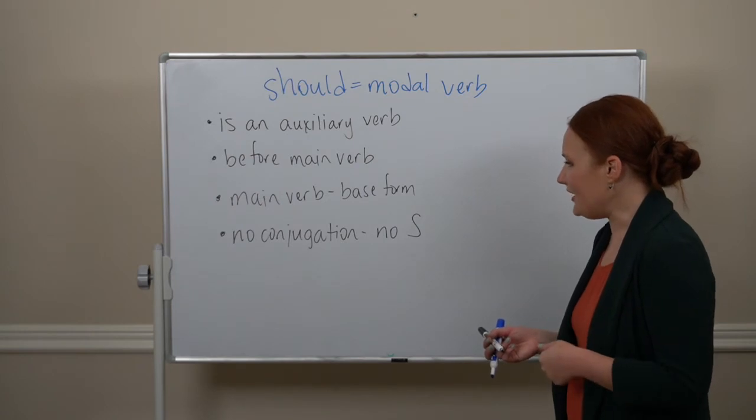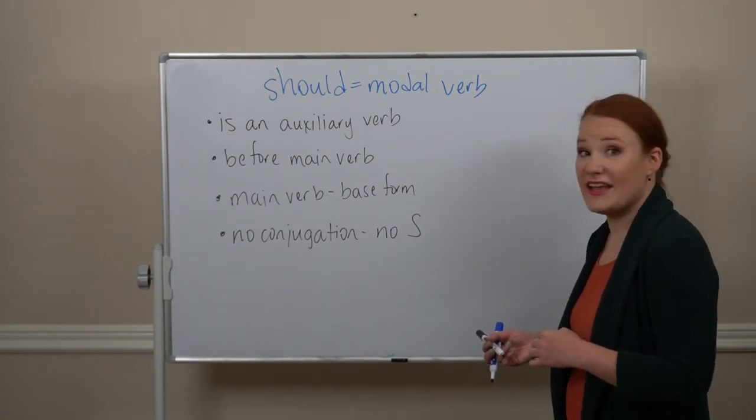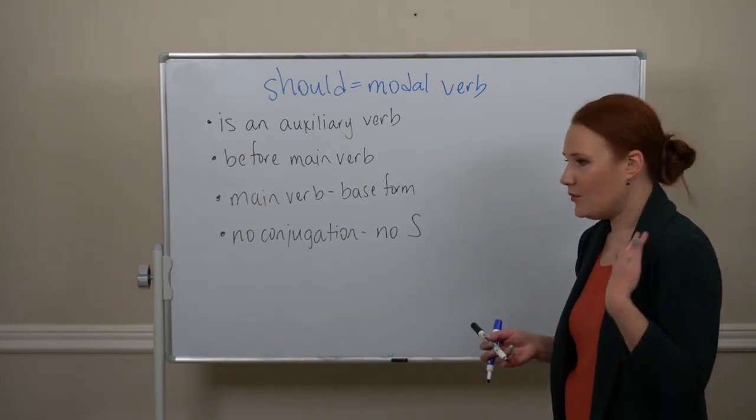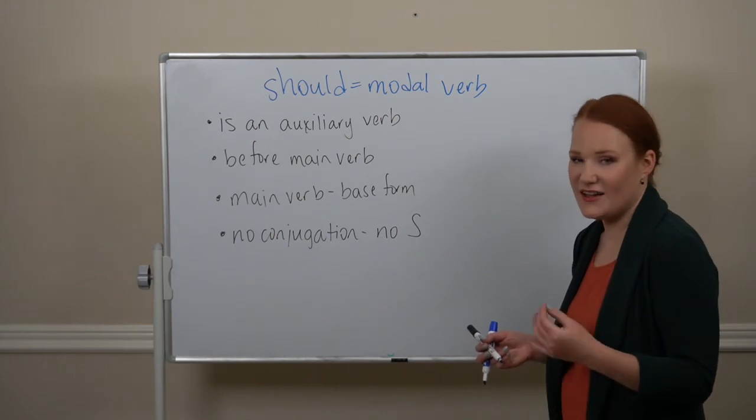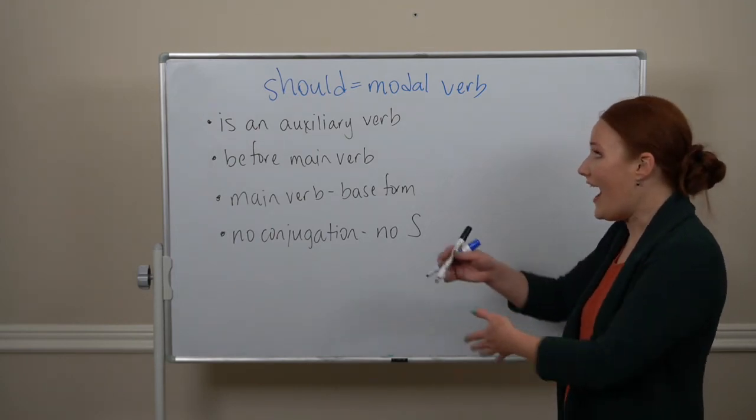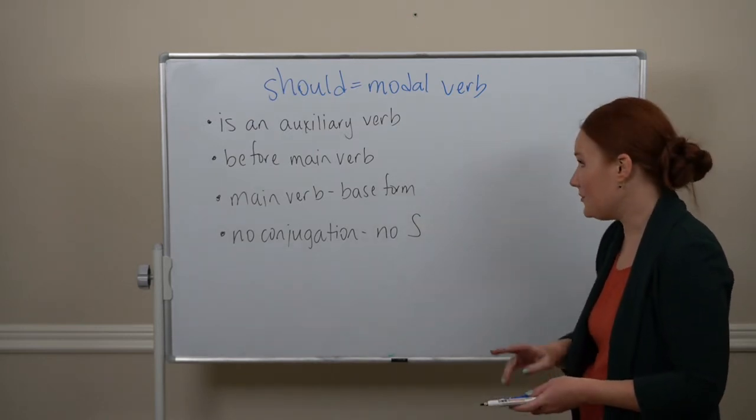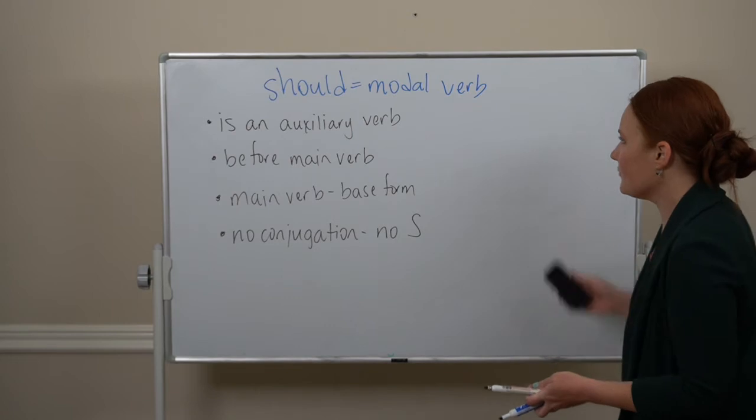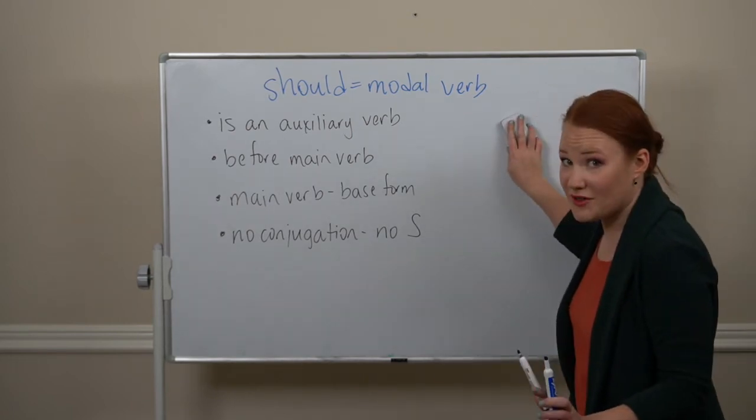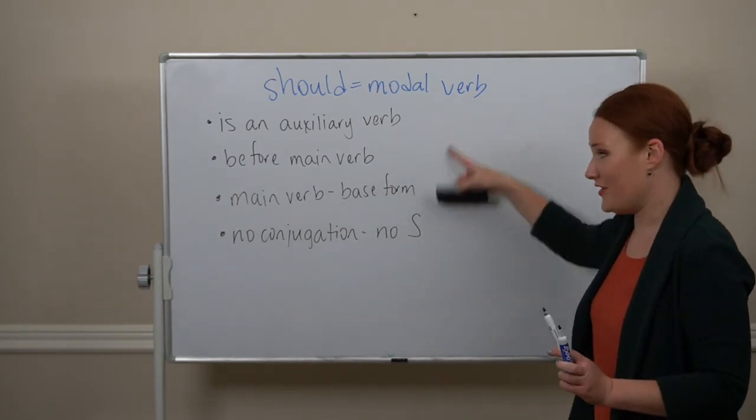It also means that to make a sentence negative, we don't need to add the auxiliary verb do or does. We already have an auxiliary verb. Should is an auxiliary verb. So we're going to learn more modal verbs in the future, so remember these, okay?